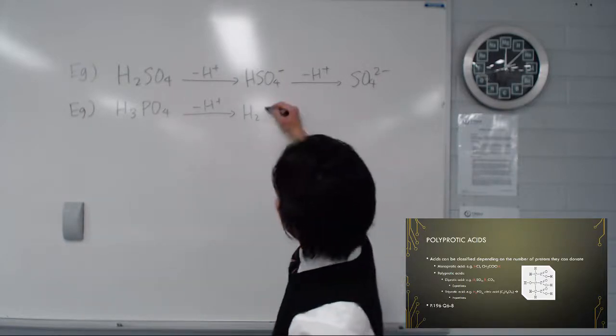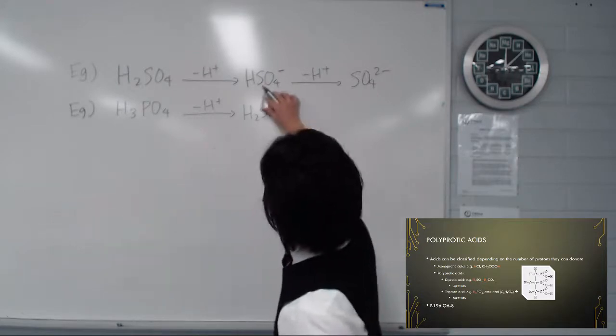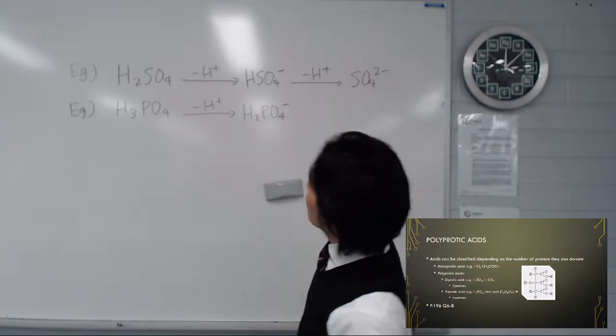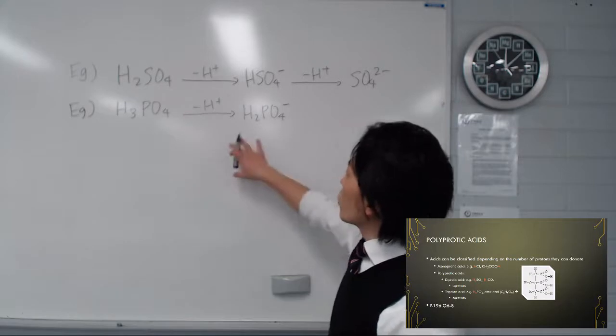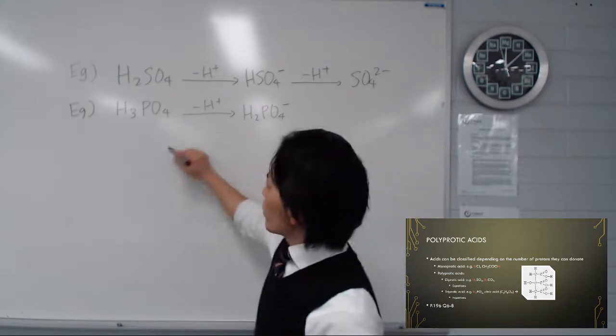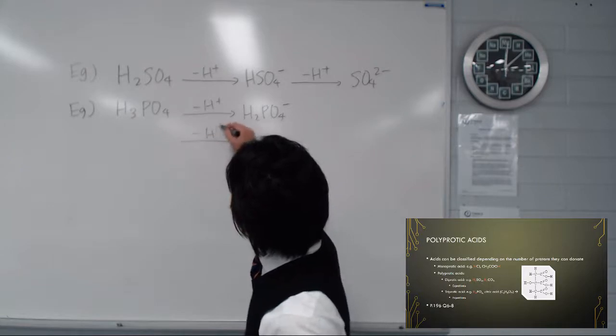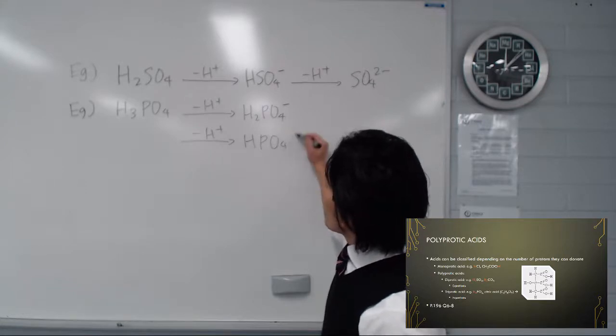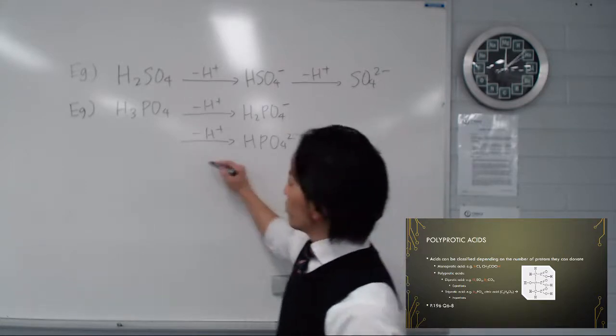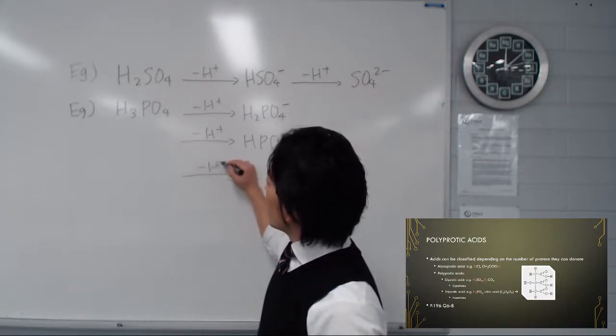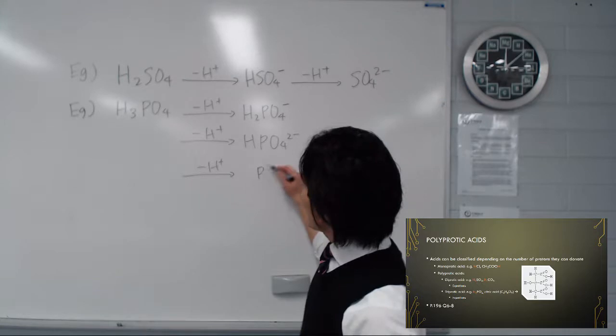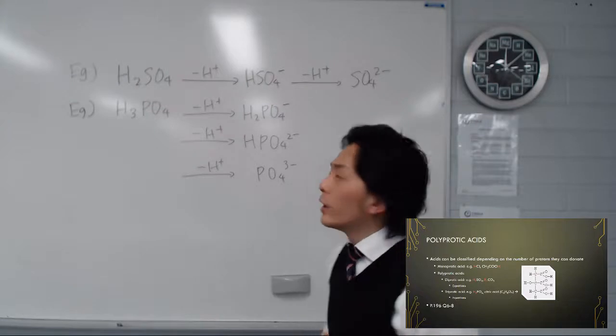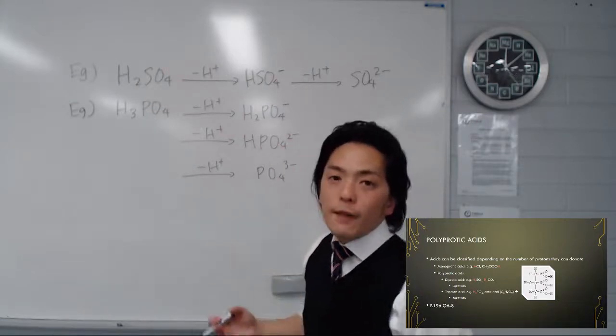One less, it's H2PO4-. PO4 doesn't change, just the number of hydrogens. We can continue - the number of H here will be one, HPO4 2-. The charge increases because you're taking something positive away. Finally it will just leave PO4 3-, the phosphate ion.